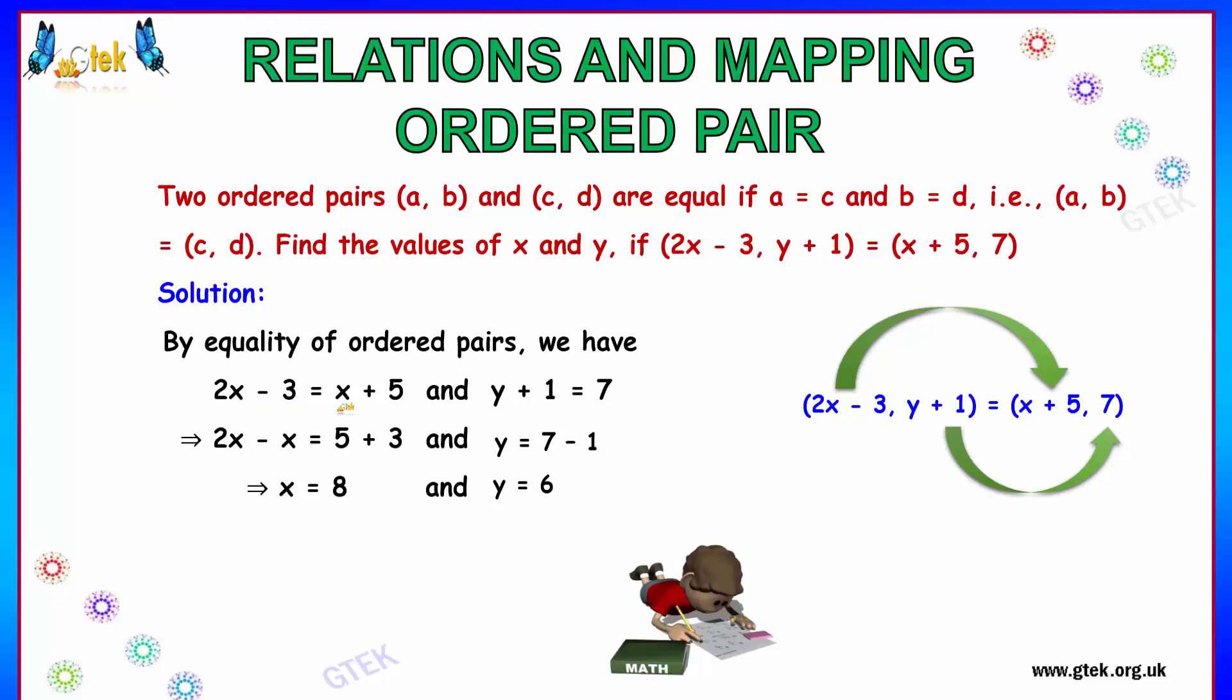So solving this equation, 2x minus 3 is equal to x plus 5. Solving this equation, this x will come to this side and it will become minus x. So minus 3 will become plus 3 here. So 2x minus x is x, and 5 plus 3 is 8. The answer is x equal to 8.